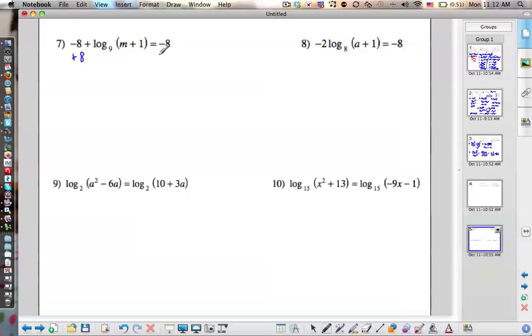So we'll just add 8, add 8. So we'll be left with log base 9 of m plus 1 equals 0.